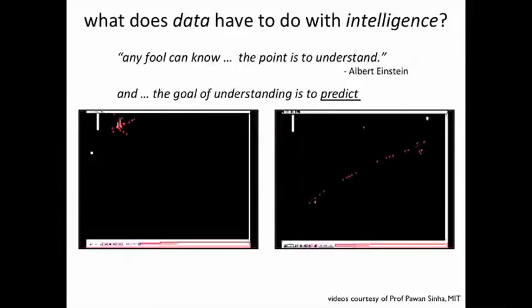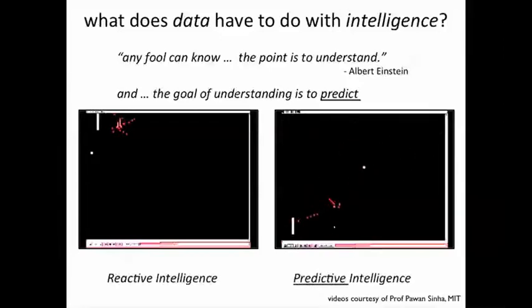It's quite simple. The player on the left is reacting to where the ball is, whereas the player on the right is predicting where the ball is going to go.